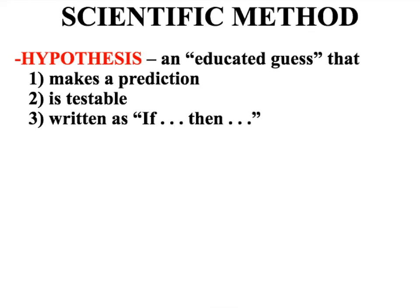The last thing to go over is another rule of designing experiments: a hypothesis. You've probably learned a hypothesis as being an educated guess, and we want to add another layer of detail. A hypothesis is an educated guess that makes a prediction and is testable with an experiment. To make a hypothesis easy to find and understand, we use a format called the if-then format.